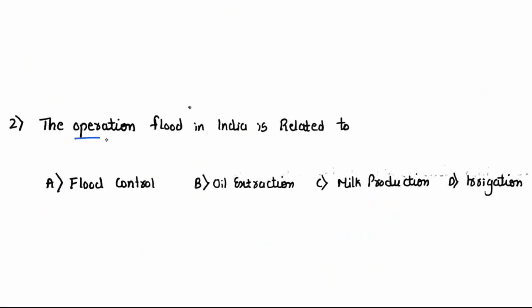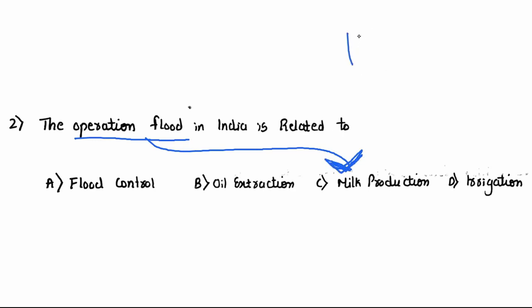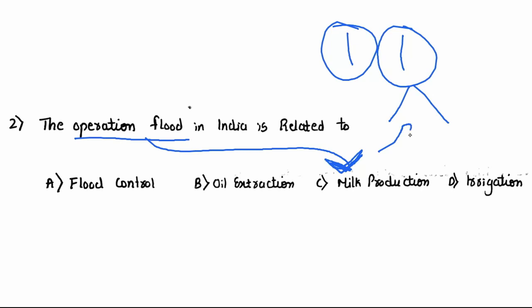Second question: Operation Flood in India is related to — A. Flood control, B. Oil extraction, C. Milk production, D. Irrigation. Operation Flood is related to milk production. This was done to make our country self-sufficient. Today India is the largest producer of milk, and also the largest producer and consumer of pulses.